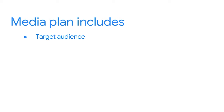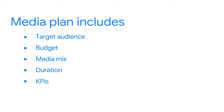When you create a digital media plan, you'll need to consider who your target audience is — whom do you need to reach? You'll also need to consider how much you can spend (the budget), which channels get how much of your budget (the media mix), how long the campaign will run (the duration), and what the key performance indicators or KPIs are, along with the performance goals and metrics you'll use to measure how you're reaching the targeted performance.